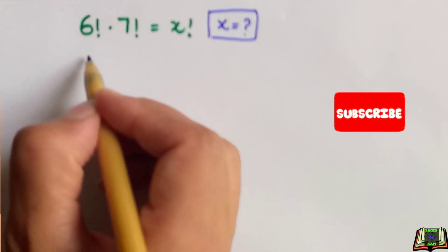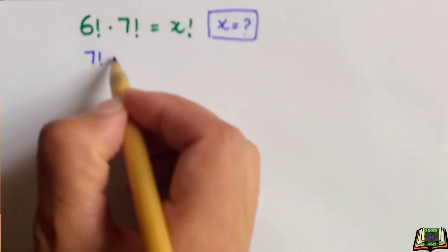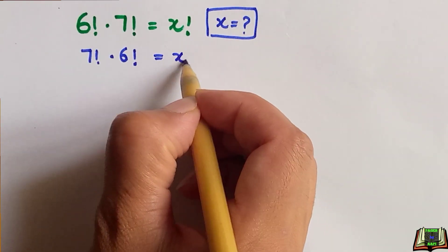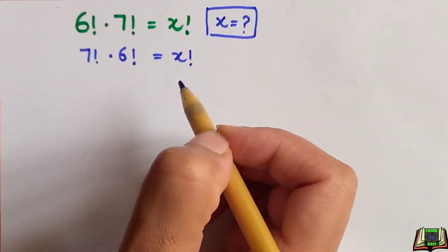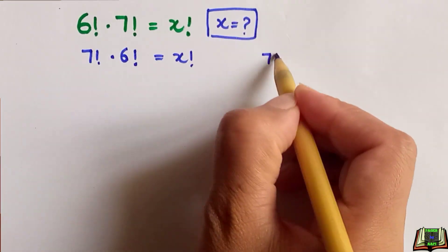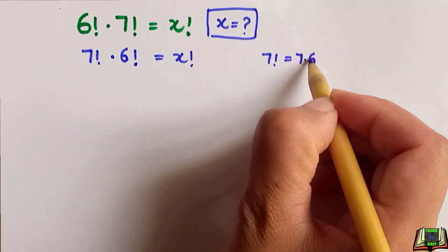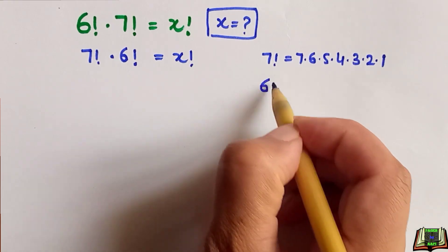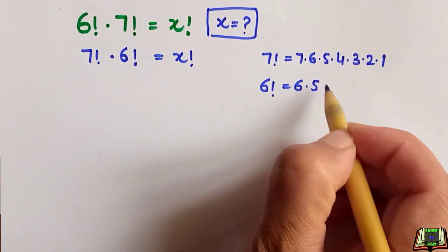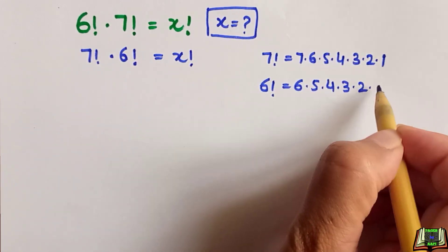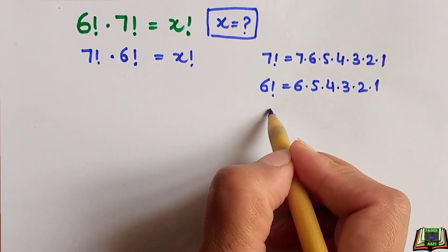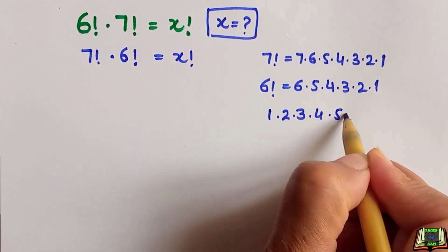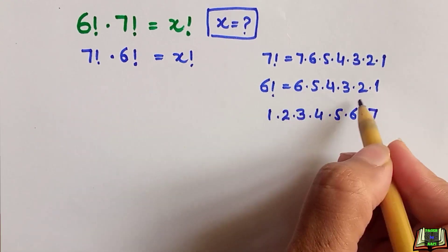We can write 6 factorial times 7 factorial as 7 factorial times 6 factorial because we can swap the places when multiplying. We know that 7 factorial equals 7 × 6 × 5 × 4 × 3 × 2 × 1. Similarly, 6 factorial equals 6 × 5 × 4 × 3 × 2 × 1, which is the same as 1 × 2 × 3 × 4 × 5 × 6.